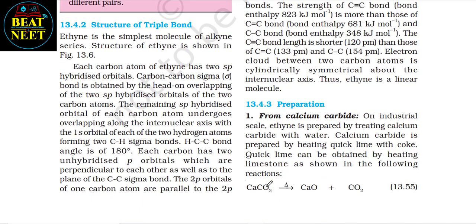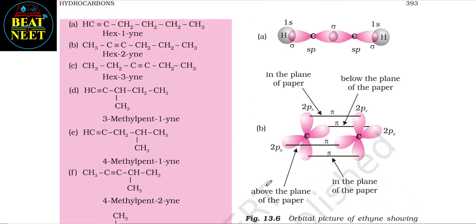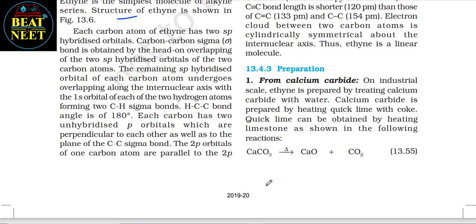13.4.2 Structure of the triple bond: ethyne is the simplest alkyne. Each carbon atom of ethyne has two sp-hybridized orbitals. The C–C sigma bond is obtained by head-on overlapping of the two sp-hybridized orbitals of the two carbon atoms. The remaining sp-hybridized orbital of each carbon atom overlaps along the internuclear axis with the 1s orbital of each hydrogen atom, forming two C–H sigma bonds.